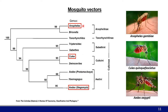Anopheles are mostly known as vectors of Plasmodium, the causative agent of malaria, but they can also transmit Onyong-nyong virus, which has caused a few outbreaks in East Africa. Culex mosquitoes are the main vectors of viruses in temperate regions such as the US, Europe, and large parts of Asia, and are often ornithophilic — meaning they like to feed on birds. Aedes mosquitoes, in particular Aedes aegypti and Aedes albopictus, are the most important arbovirus vectors in the tropics and subtropics, transmitting Zika, Dengue, and Chikungunya viruses.